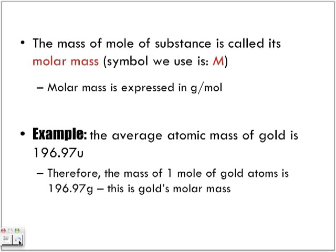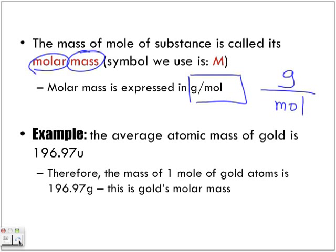The mass of one mole of a substance is called the molar mass, and we use the capital M. Molar mass is always expressed in grams per mole. Think of it this way: grams per mole is grams over mole — grams per one mole, but we never write the one. It's just like units of kilometers per hour, which is really speed per one hour, but we don't write that one. So grams per mole means grams per one mole of that substance.